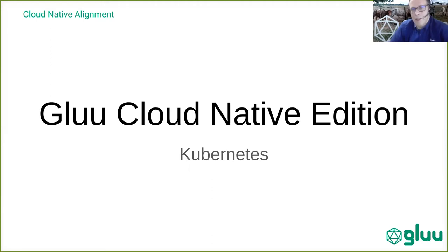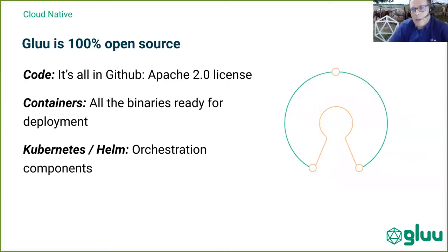This distribution is 100% open source. We had some ideas about how to license it, but we landed on a decision to just open source the whole platform. That means the code is open source, the binaries — for example, the containers — are open source, and also the deployment assets like the Kubernetes and Helm files, shell scripts, and the other things you really need to make it easy to deploy these containers and set up a Cloud Native deployment of the Glue server.